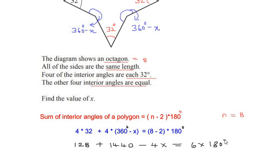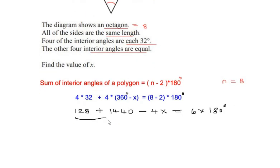So let us simplify this further. Adding these two like terms we get a value of 1568 minus 4x is equal to 6 times 180, which gives us a value of 1080.